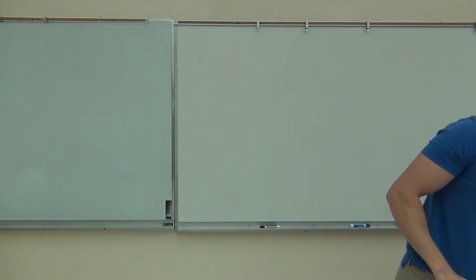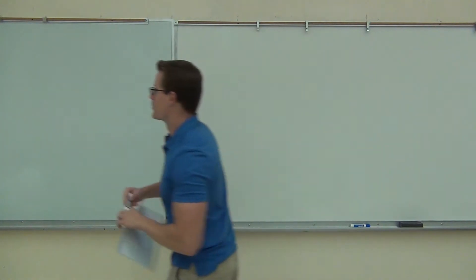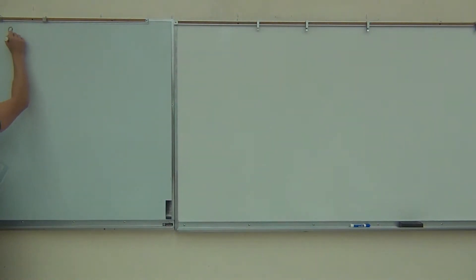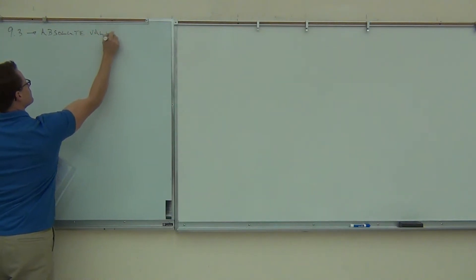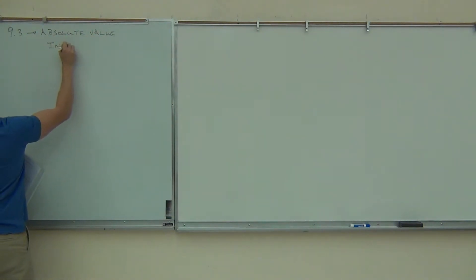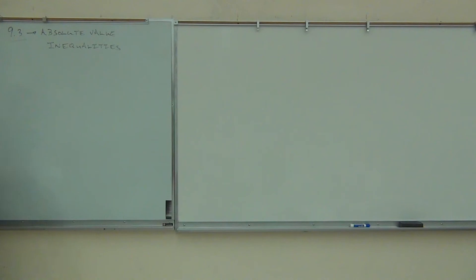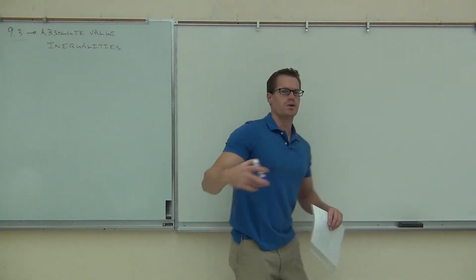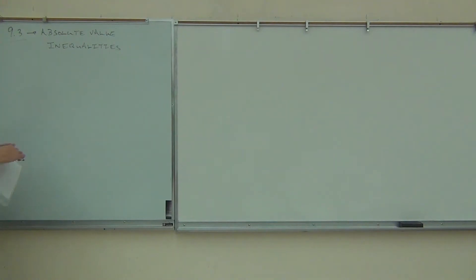We've talked about absolute value. We've talked about inequalities. Today we're going to talk about absolute value and inequalities — we're going to put those two ideas together. That's what we're talking about in section 9.3. We're going to build this up and try to do some more advanced problems in a little while.